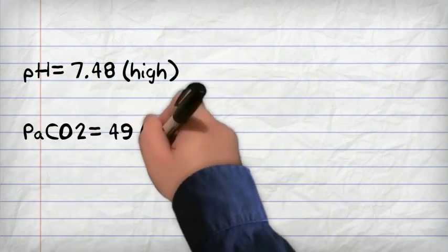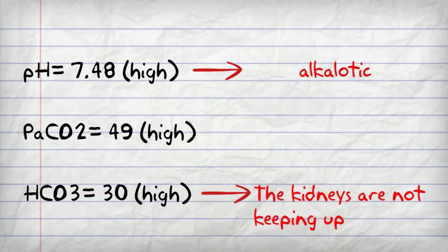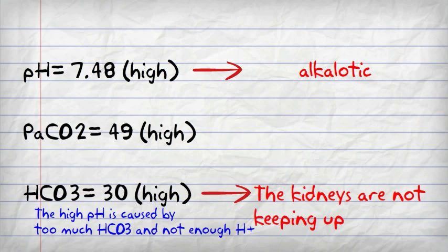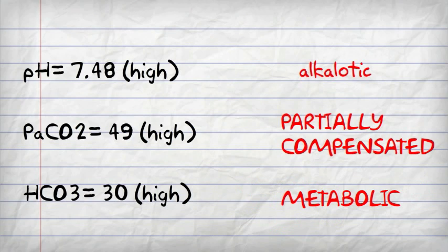Again, high pH, high CO2 this time, and high bicarbonate. So we're alkalotic, it's caused by the high base, the bicarbonate, so it's due to the kidneys. And now the CO2, the acid is becoming higher because the lungs are helping, so it's partially compensated metabolic alkalosis.